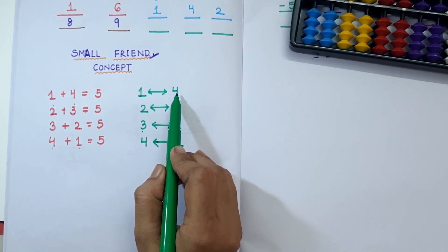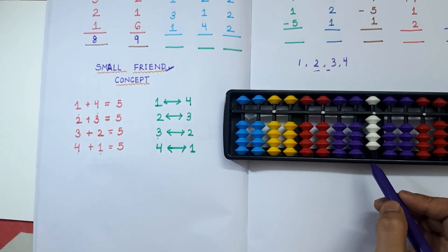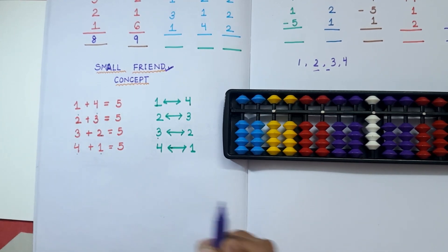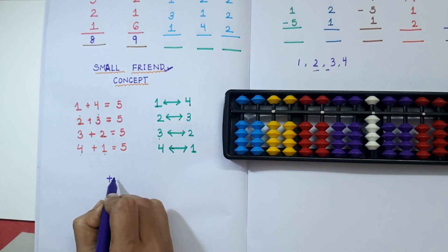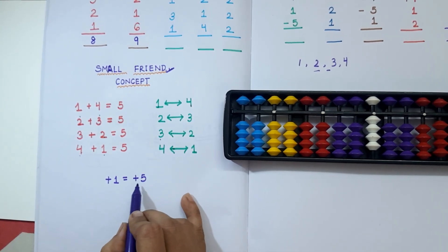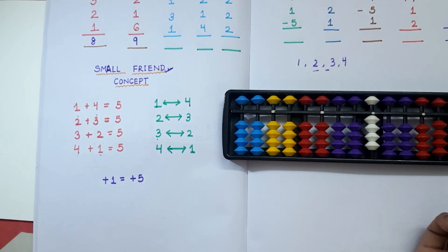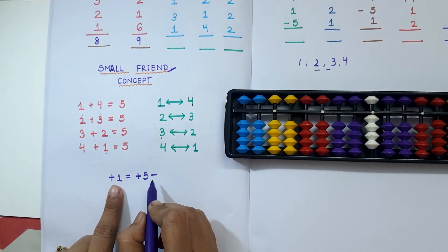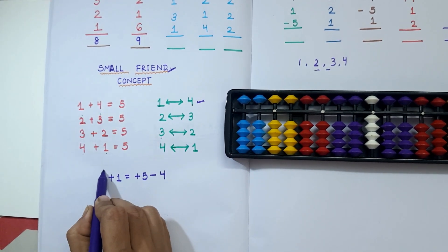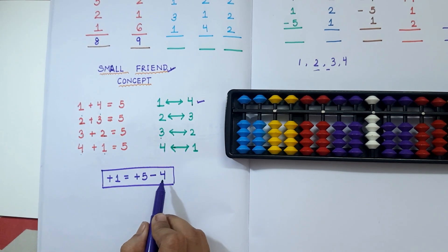Now we have learnt which number is the small frame of which. We will see how these small frame formulas are designed. If we want to add one more bit but we don't have one more bit at the lower deck, we can use this formula: plus 1 equals plus 5 minus 4. We write plus 5 because the upper bits are available at the upper deck, minus the small frame of 1 which is 4.